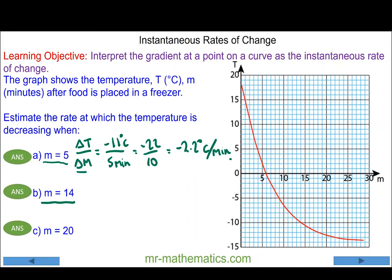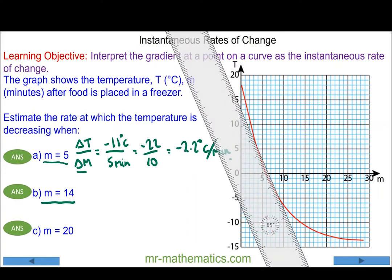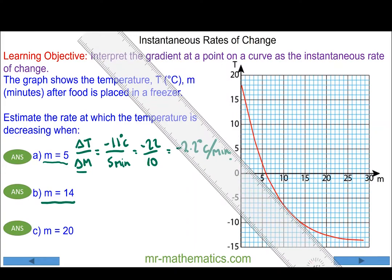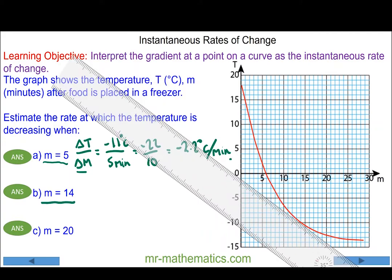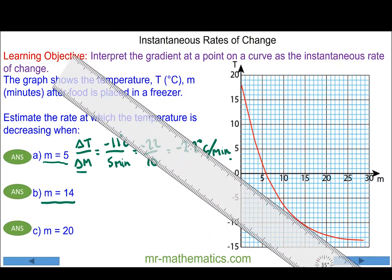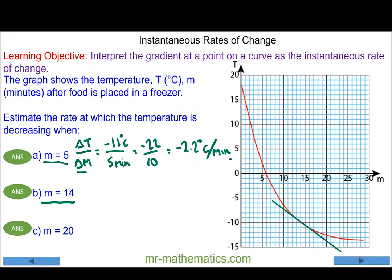Moving on to the rate of change of temperature after 14 minutes. We draw a tangent at the curve this time when m is 14, and we can work out the gradient of this curve using the change in temperature divided by the change in minutes. Again I will use five minutes and the change in temperature from here to here.